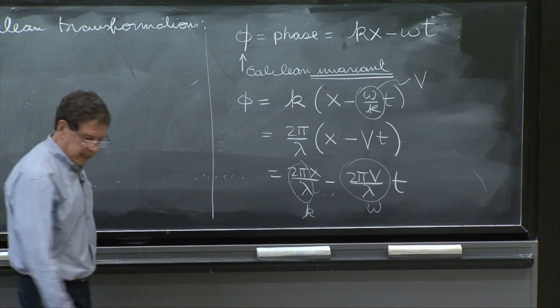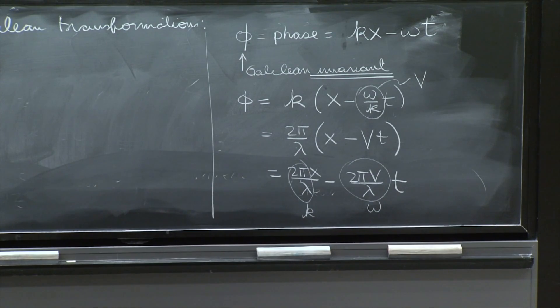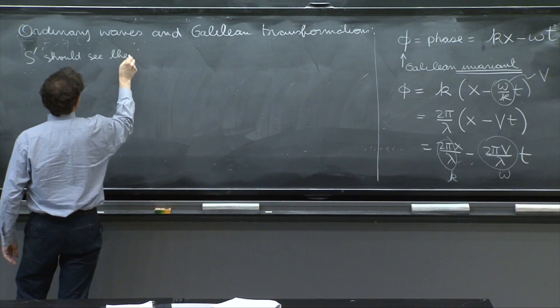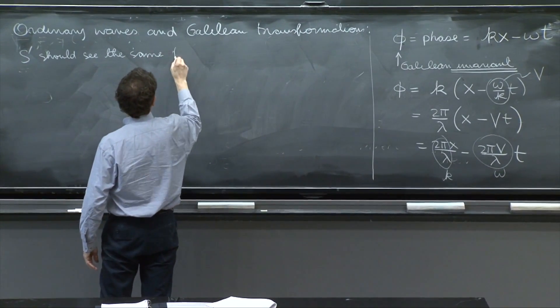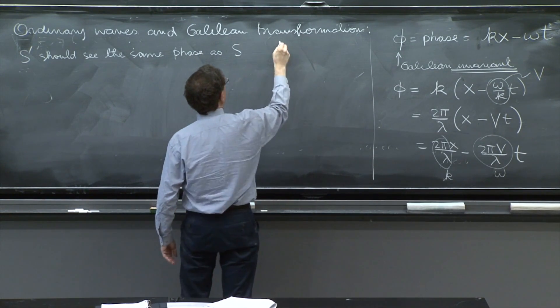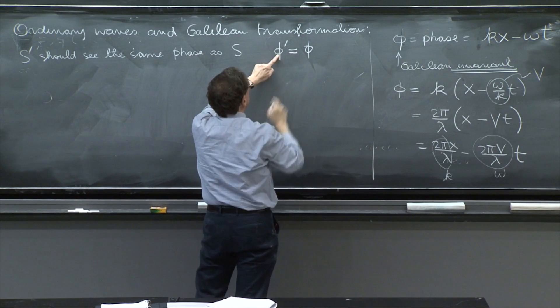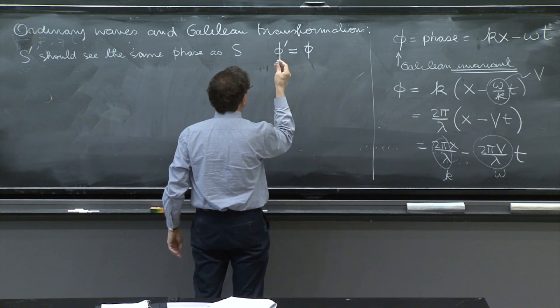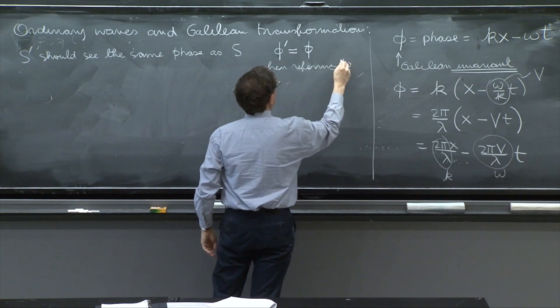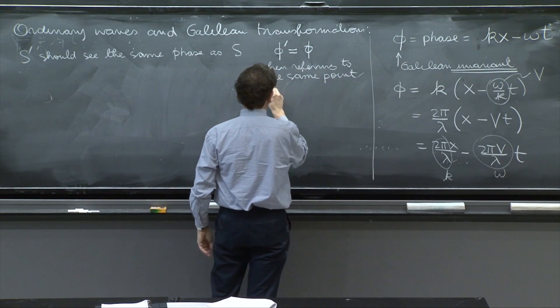And we've said that it's a Galilean invariant. So I will say that the observer S prime should see the same phase as S. So phi prime, the phase that S prime sees, must be equal to phi, when referring to the same point and same time.